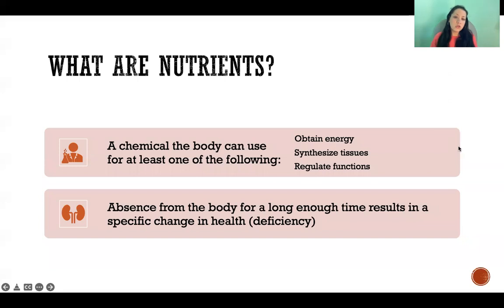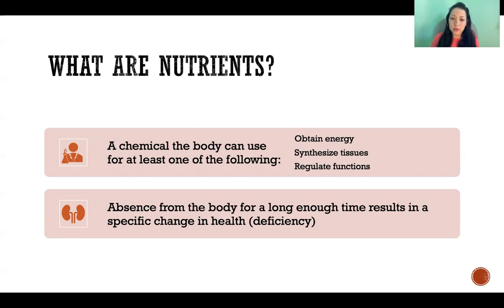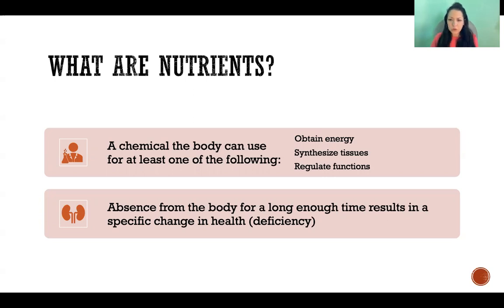So what is a nutrient? It's a chemical that meets both parts of this definition — if it meets only one, then it's not technically a nutrient. The first part of the definition is that it's a chemical the body can use to obtain energy, synthesize tissues, or regulate functions. In nutrition, when we talk about obtaining energy, we're talking about calories — not how energized you feel, but how many calories you get from eating that thing.